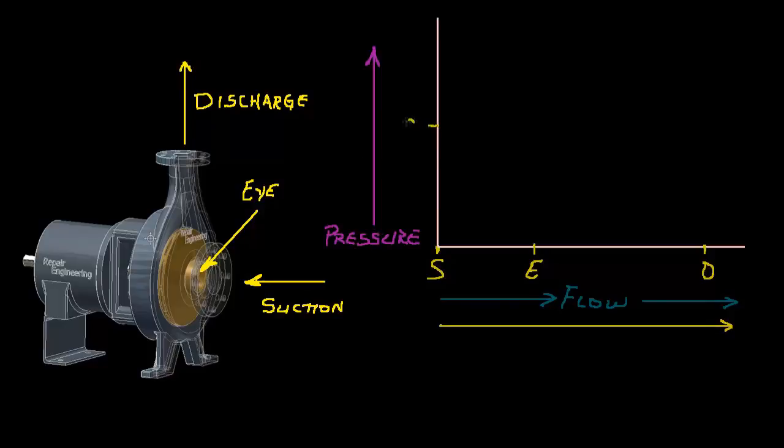On the vertical axis of the graph, I'll chart the corresponding pressure of the fluid at different locations in the pumping cycle. Let's say that the suction pressure is at this location, and the pressure at the eye of the impeller is at this location, lower than the suction pressure, and the discharge pressure is here. So by connecting the dots, the typical pump curve looks something like this.